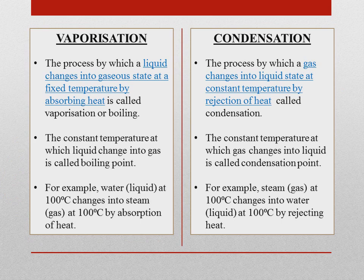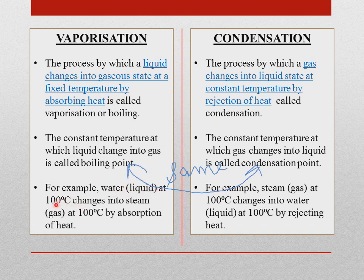The process by which a liquid changes into its gaseous state at fixed temperature by absorbing heat is called vaporization. While the process by which a gas changes into liquid at constant temperature by reduction of heat is called condensation. The constant temperature at which a liquid changes into gas is called boiling point, while the constant temperature at which a gas changes into liquid is called condensation point. The boiling point and condensation point of a substance are the same. For example, water changes into steam at 100°C by absorbing heat, while steam changes into water at 100°C by rejecting heat.